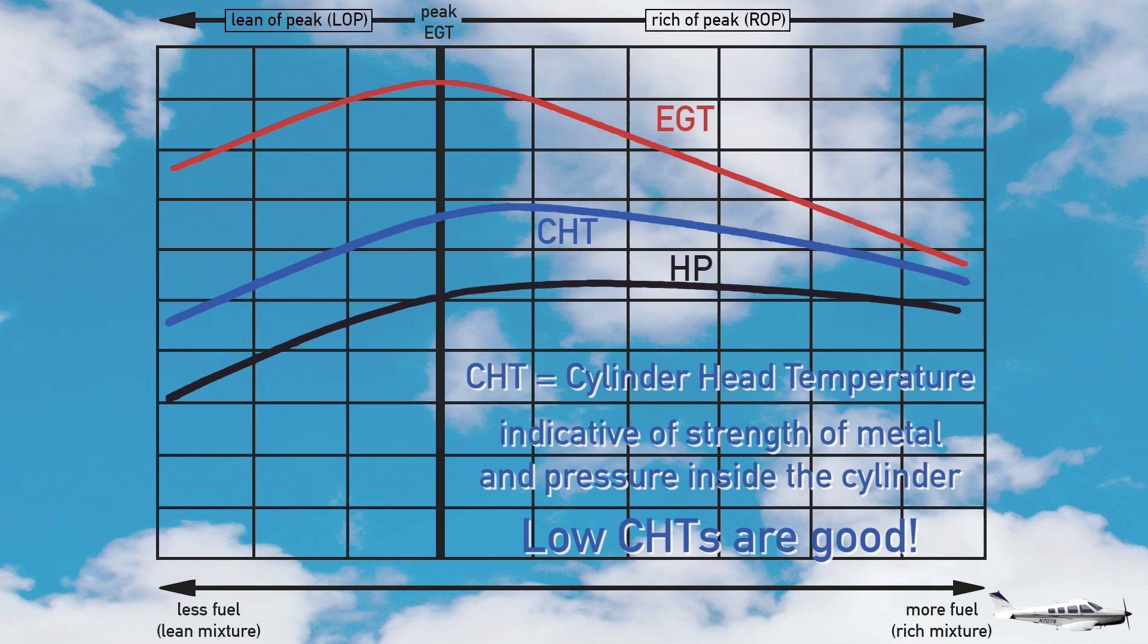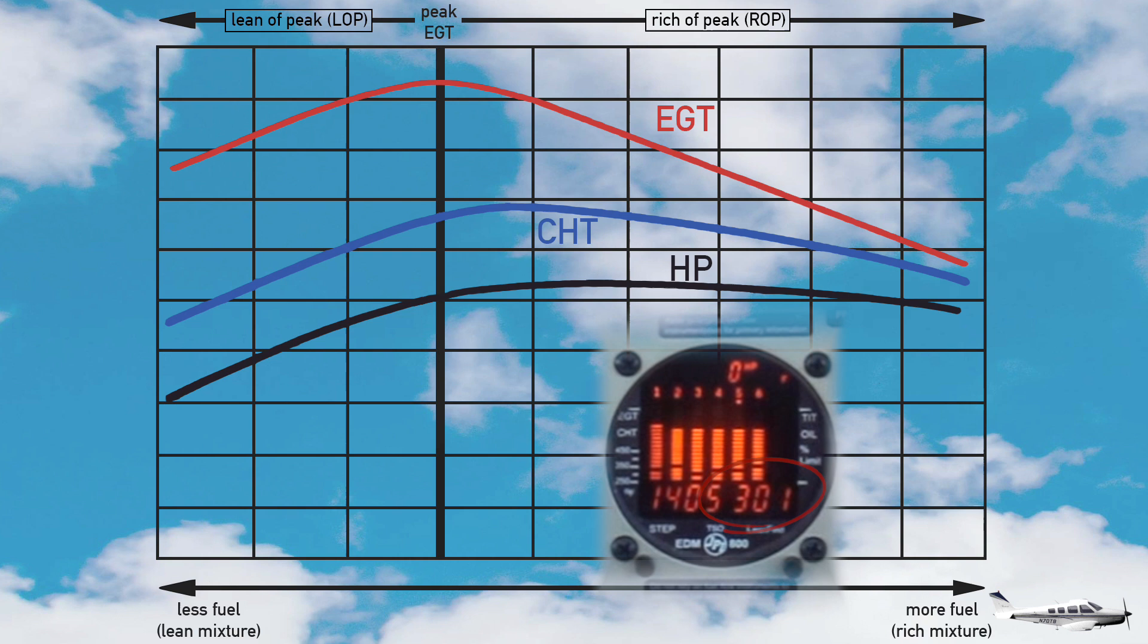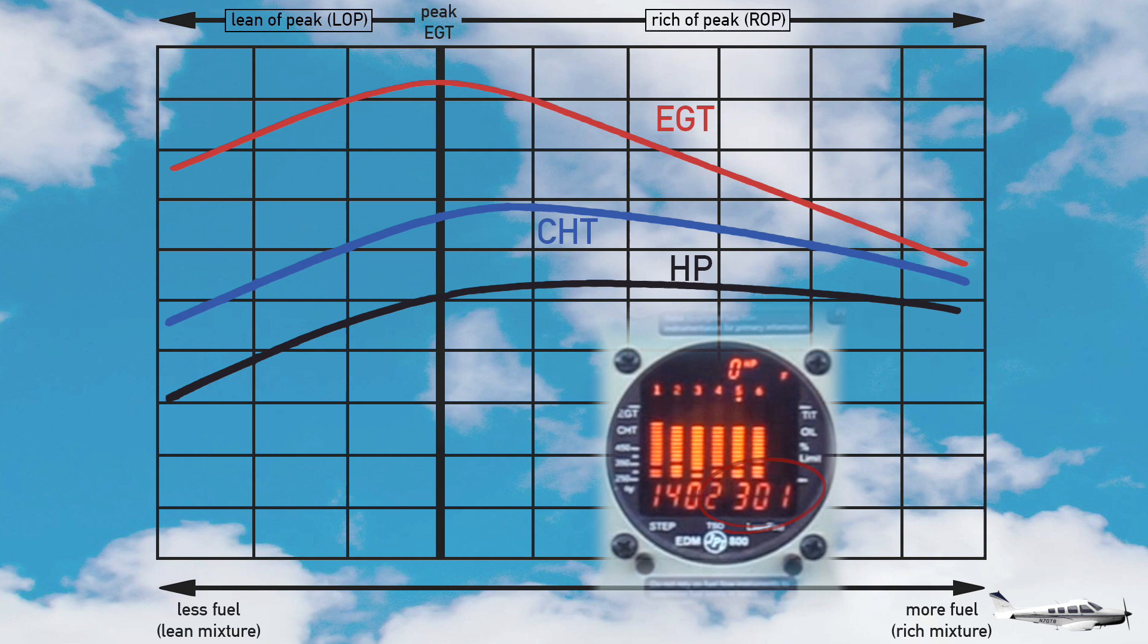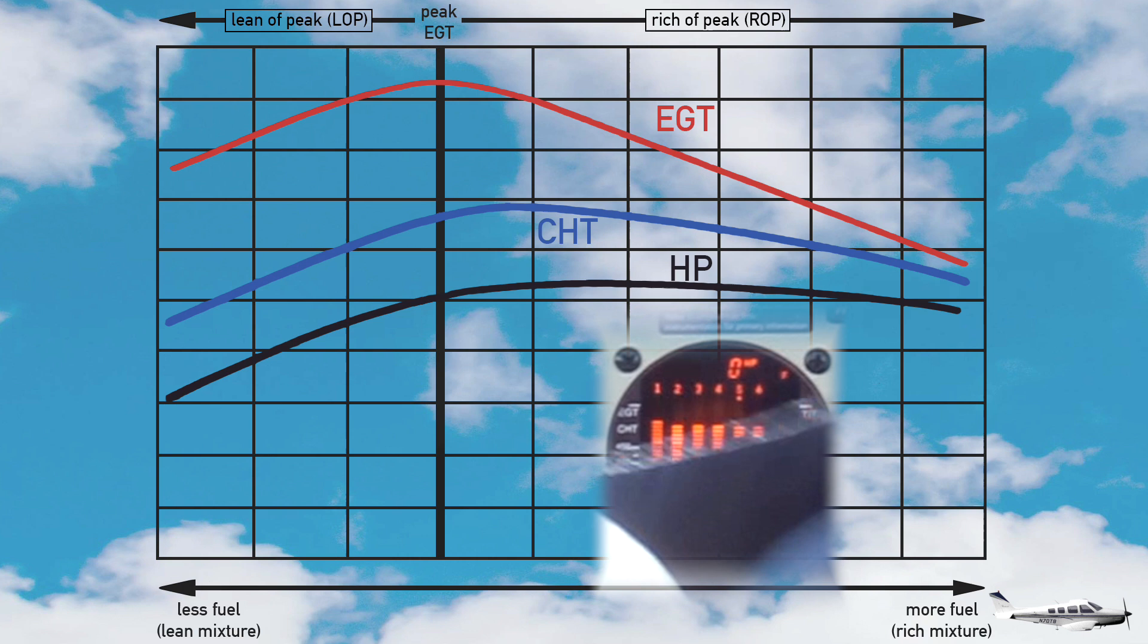One important thing to know about CHT is that it changes slowly, as opposed to the immediate changes we see for power and EGT when changing the mixture. The reason for the slow CHT changes is the thermal mass of the cylinder. It takes time for all that metal to warm up or cool down in response to changes of the combustion process on the inside. Remember this when you are looking for changes on your engine monitor. The EGT readout follows the mixture changes pretty much instantly, whereas the CHT is trailing behind and can take a couple of minutes to stabilize at a new value.